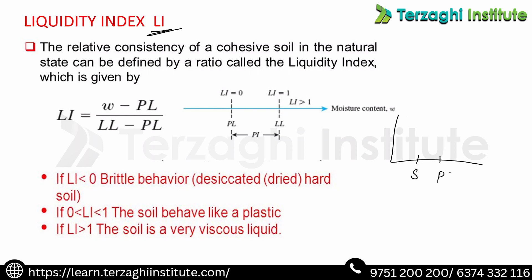The liquidity index formula: on the graph we have water content W, liquid limit, and plastic limit. Liquidity index = (W − Plastic limit) / (Liquid limit − Plastic limit).